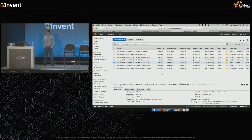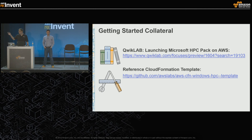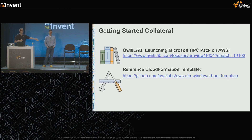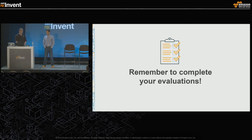Everything we've presented is available on GitHub - the link will be provided. We also have a quick lab just recently published: if you want to know how to build and deploy Microsoft HPC Pack 2012 R2 on AWS, go to that lab. You can actually do it downstairs using WorkSpaces and test it step by step - deploying HPC Pack on AWS so you can understand exactly what the PowerShell and CloudFormation templates are doing. Thank you.